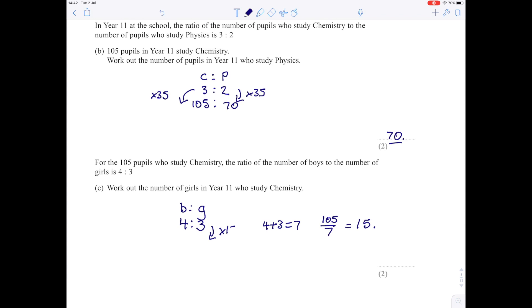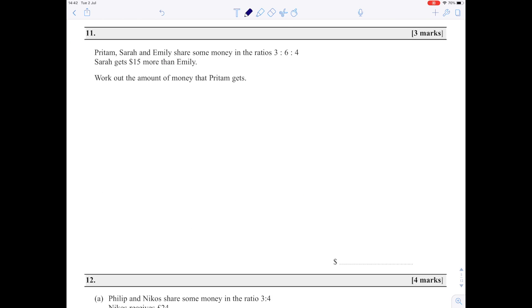The number of girls is 3 times 15, which is 45. So there are 45 girls who study Chemistry. As a check, the boys would be 4 times 15, which is 60, and 60 boys plus 45 girls gives you 105 pupils.